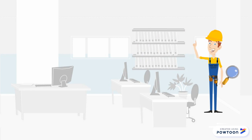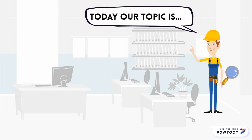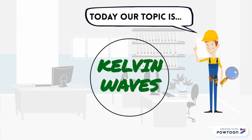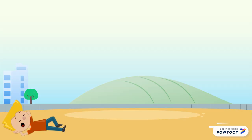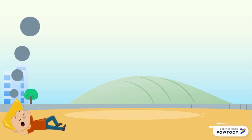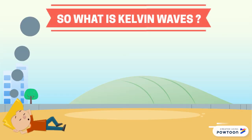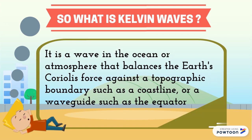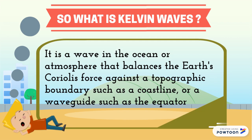Today our topic is Kelvin waves. It is a wave in the ocean or atmosphere that balances the Earth's Coriolis force against a topographic boundary such as a coastline, or a waveguide such as the equator.